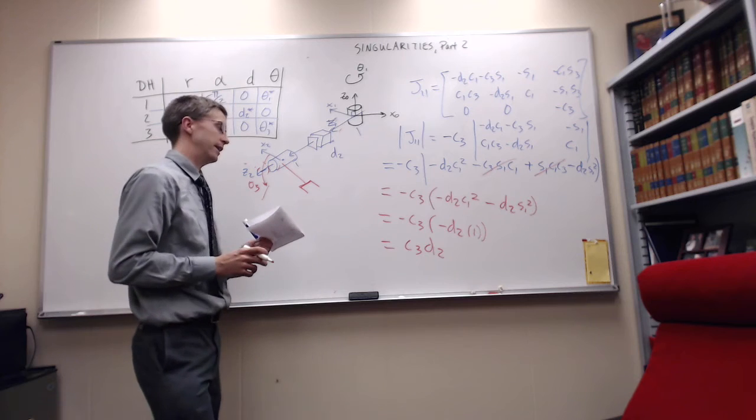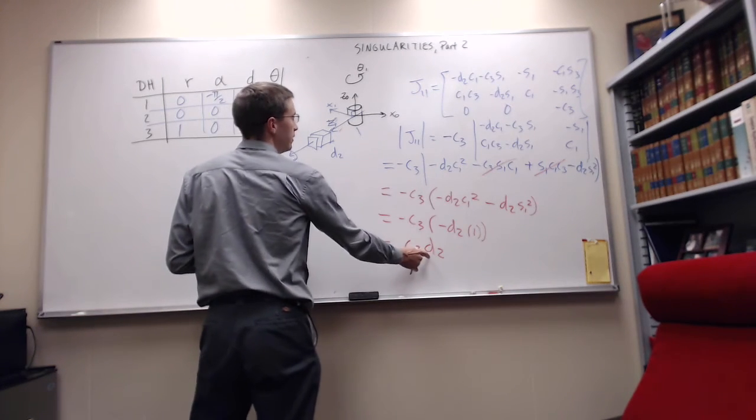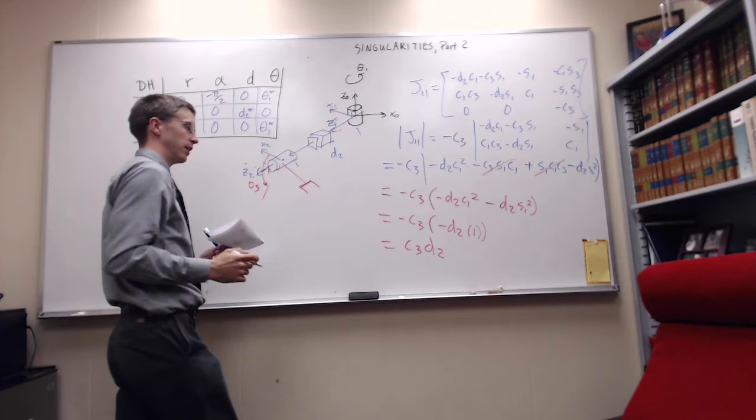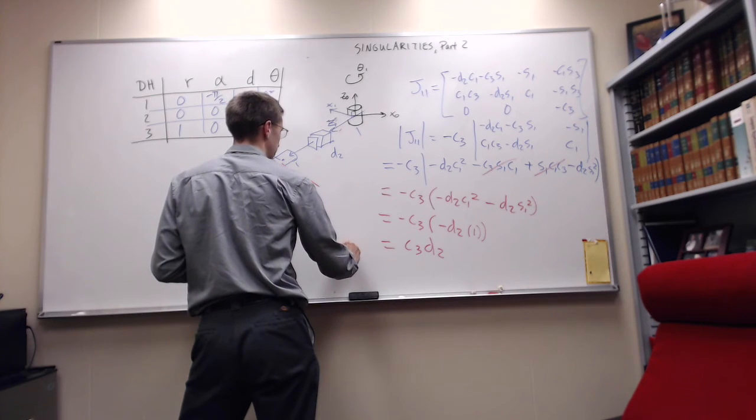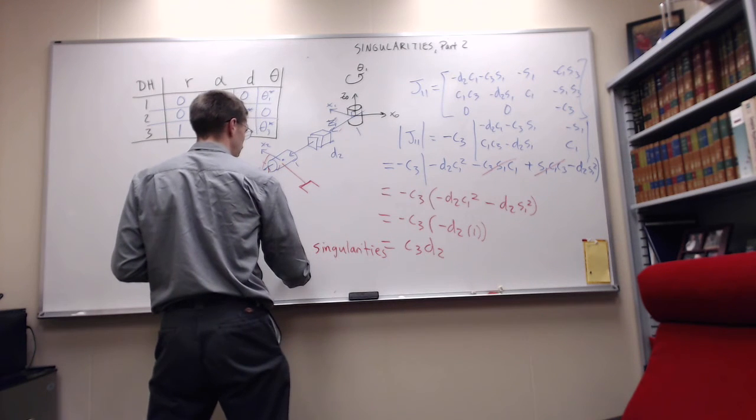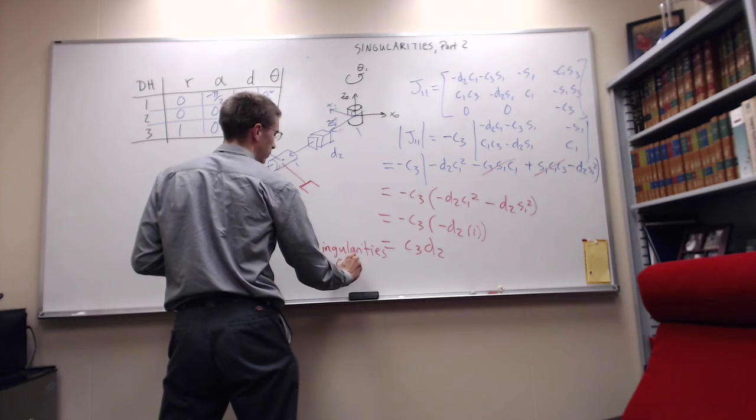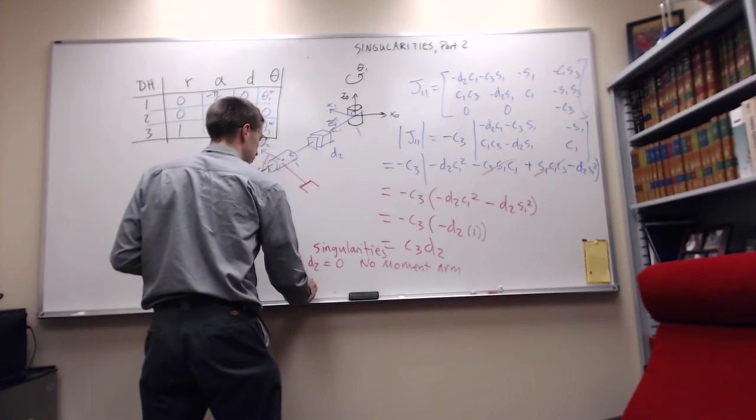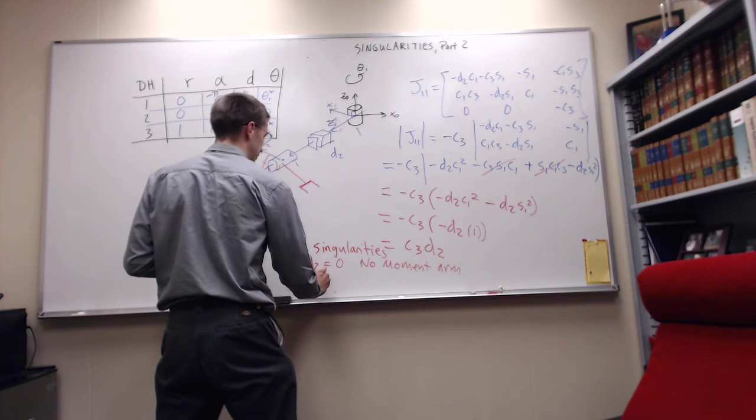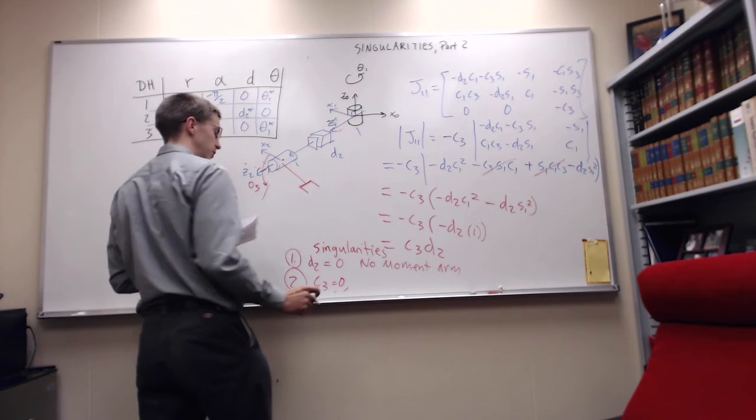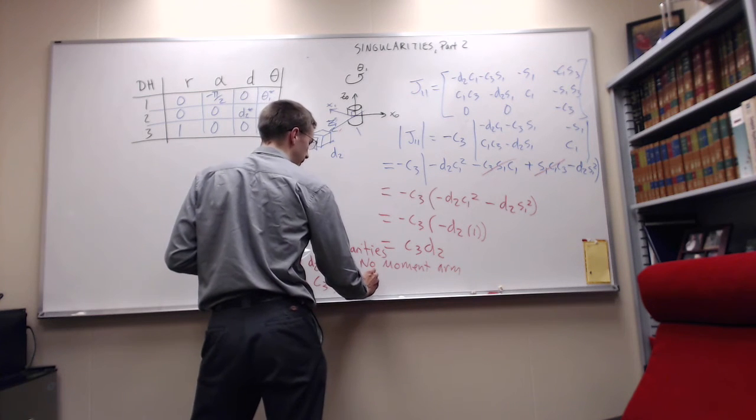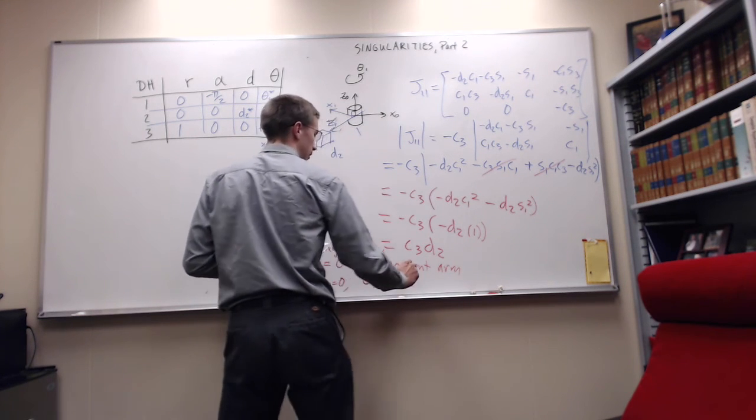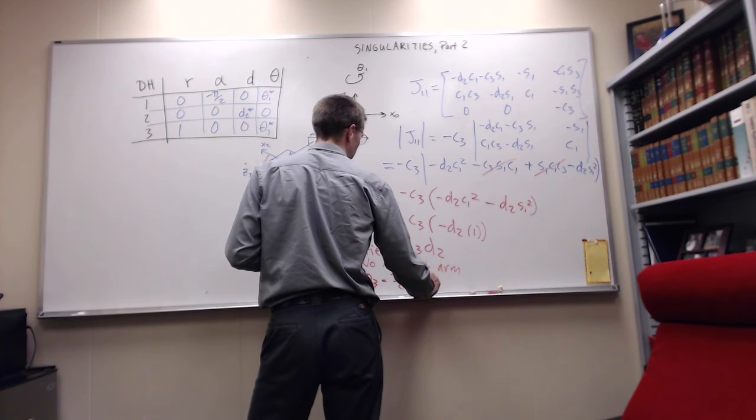So when does this robot hit a singularity? If D two is zero, which means I'm coincident here, I have no moment arm and can't generate any velocity. The first singularity we get is D two equals zero, no moment arm. The second one is when C three equals zero, so theta three equals pi over two plus K pi.